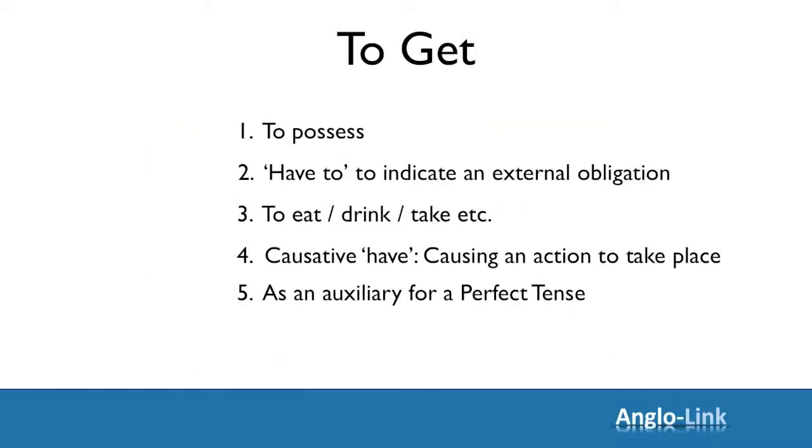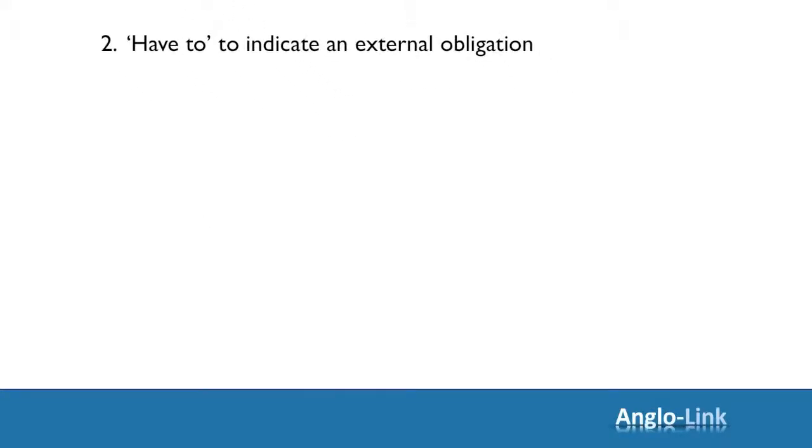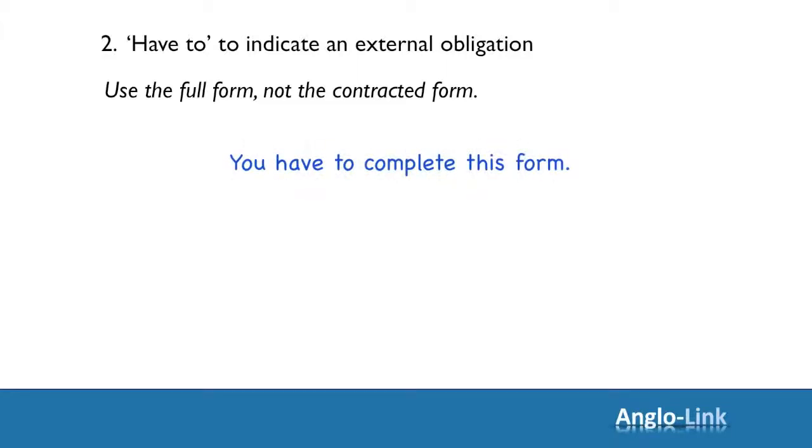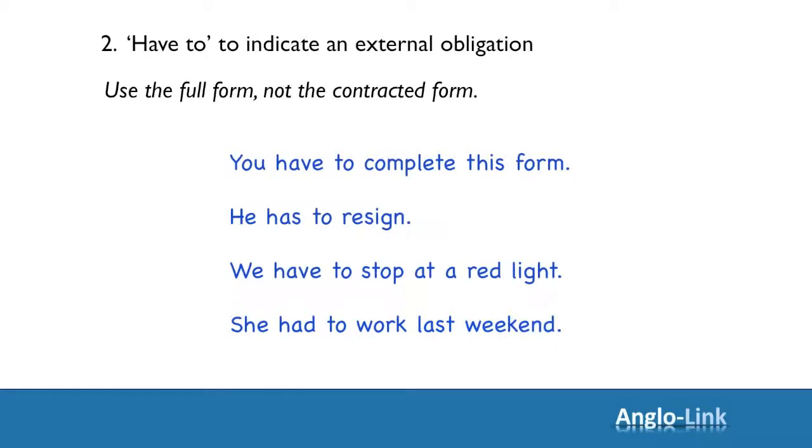Let's look at the second meaning. HAVE TO. To indicate an external obligation. Once again, it's the main verb, so use the full form, not the contracted form. Let's look at the examples. You have to complete this form. He has to resign. We have to stop at a red light. She had to work last weekend.